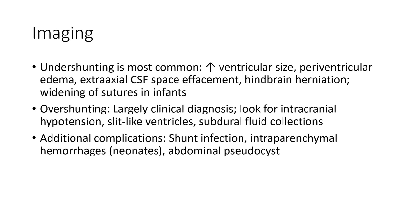On imaging, under-shunting most commonly shows increased ventricular size, periventricular edema, effacement of subarachnoid space, and widening of sutures over time. Over-shunting appears as large-looking cortical sulci consistent with intracranial hypotension, and slit-like cortical sulci.